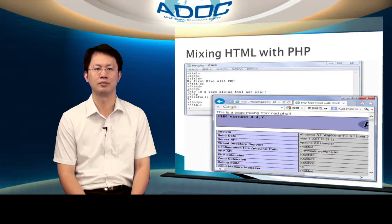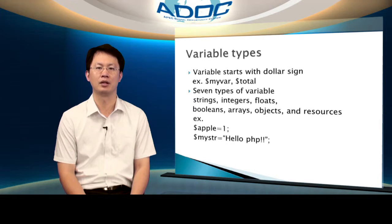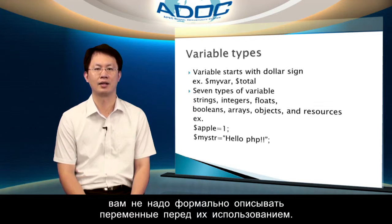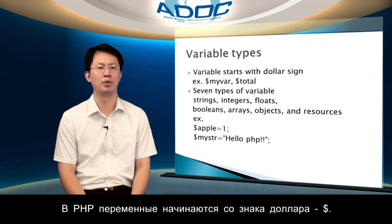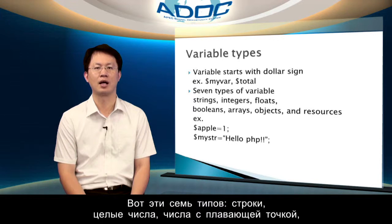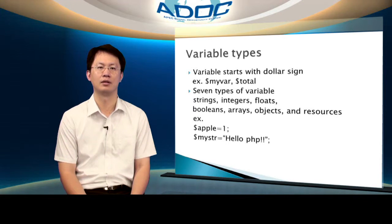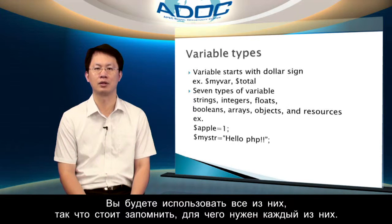Like any other computer language, PHP can use variables. And as with JavaScript, you don't need to formally declare variables before you use them. In PHP, variables begin with a dollar sign. PHP has seven types of variables, and all but one holds a specific class of information. The seven types are: strings, integers, floats, booleans, arrays, objects, and resources. You will be using them all throughout this course, so it is worthwhile remembering what each does.